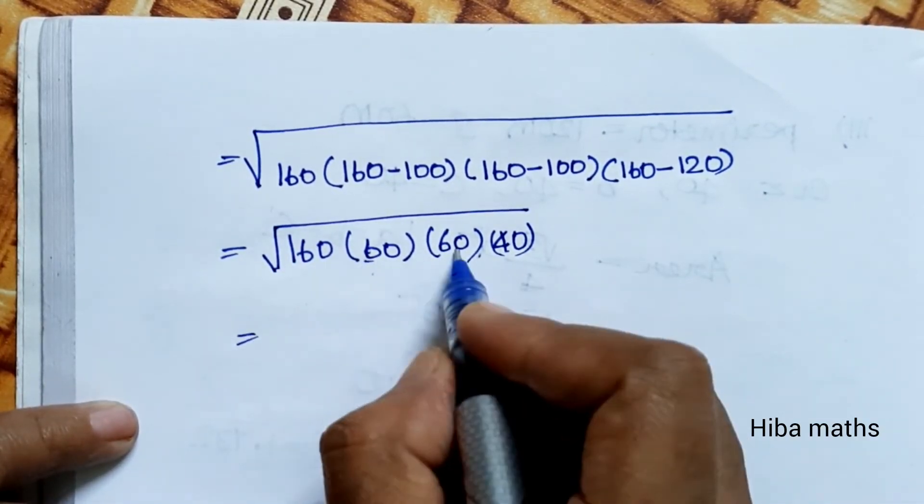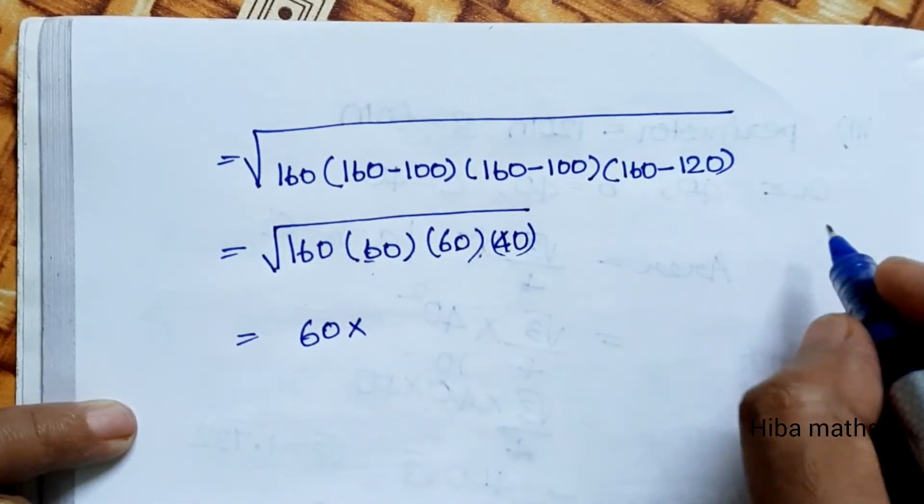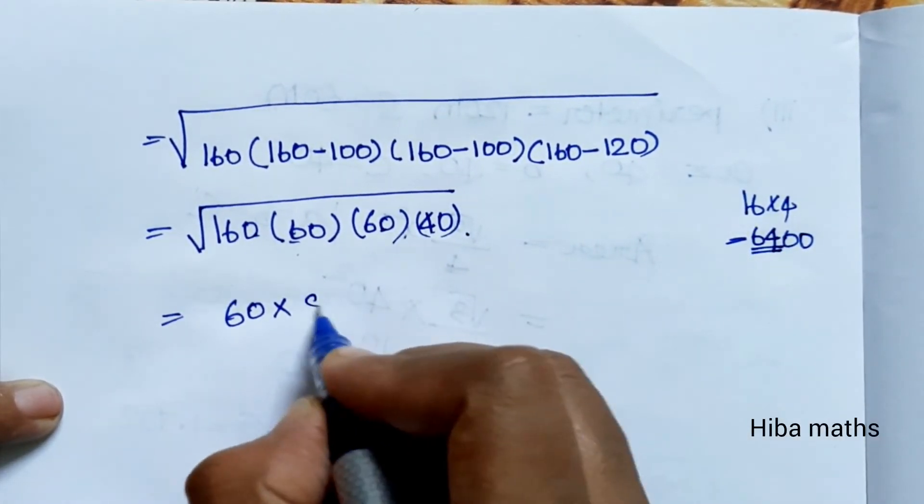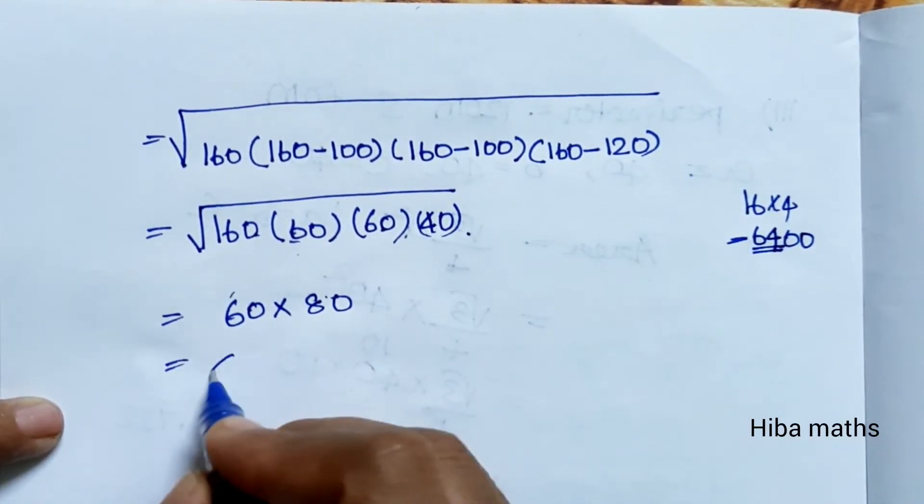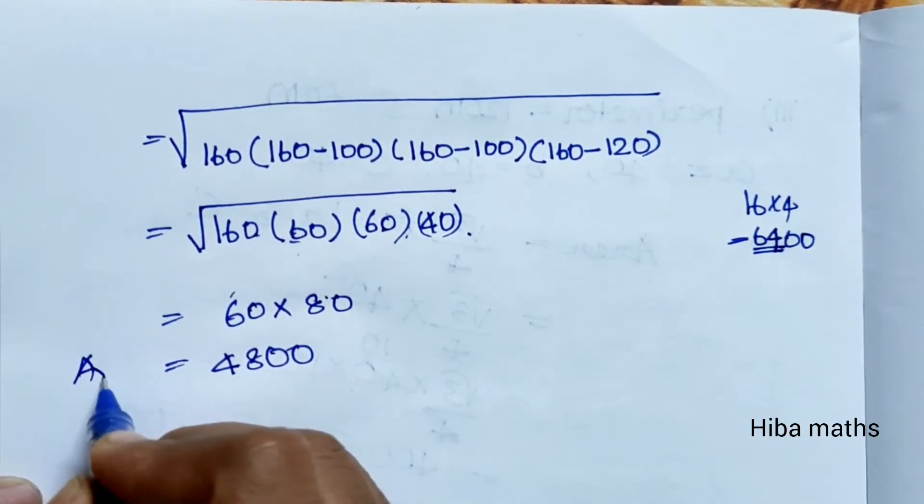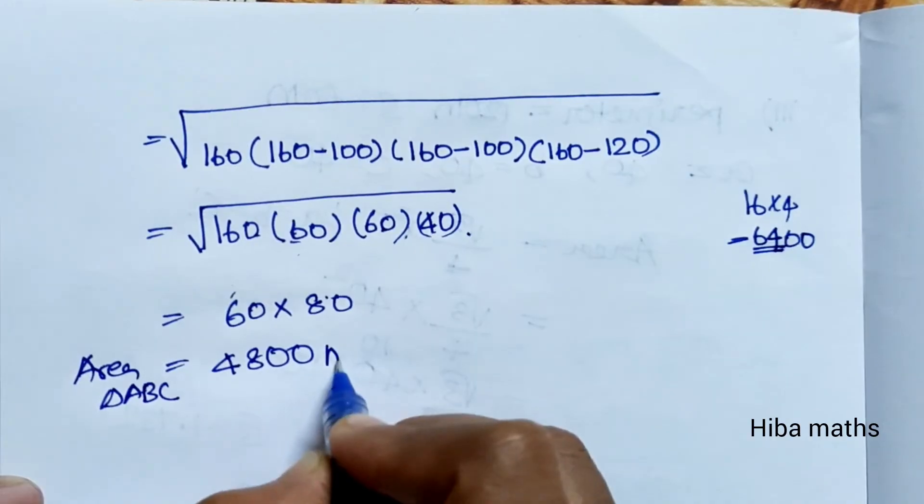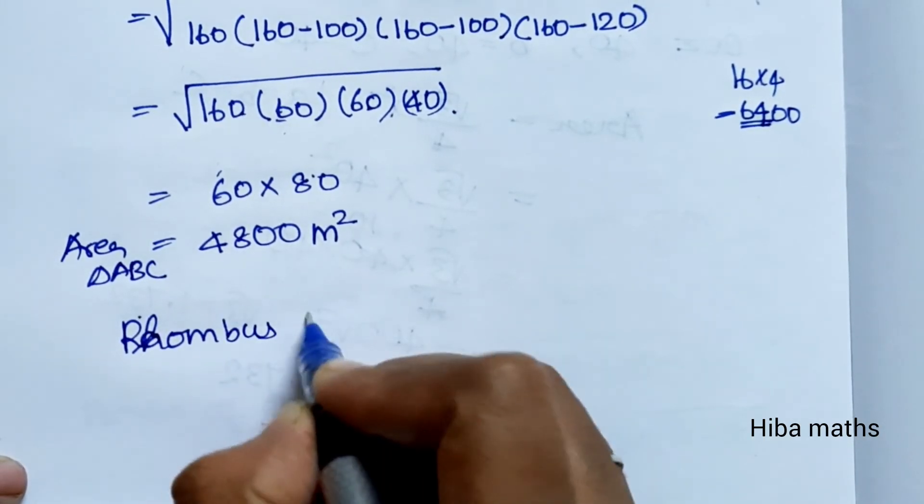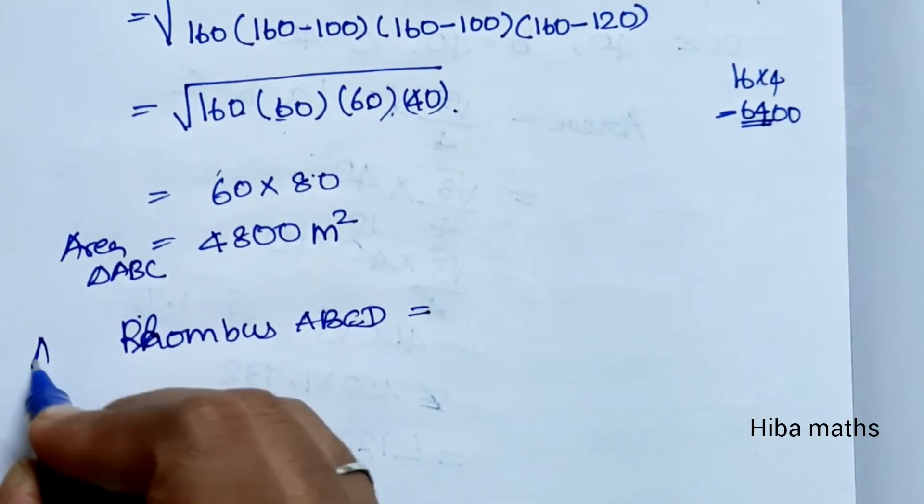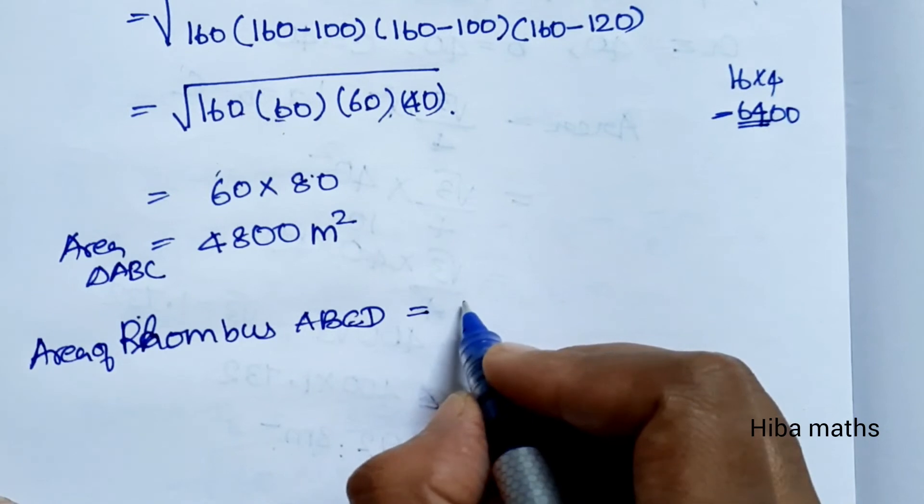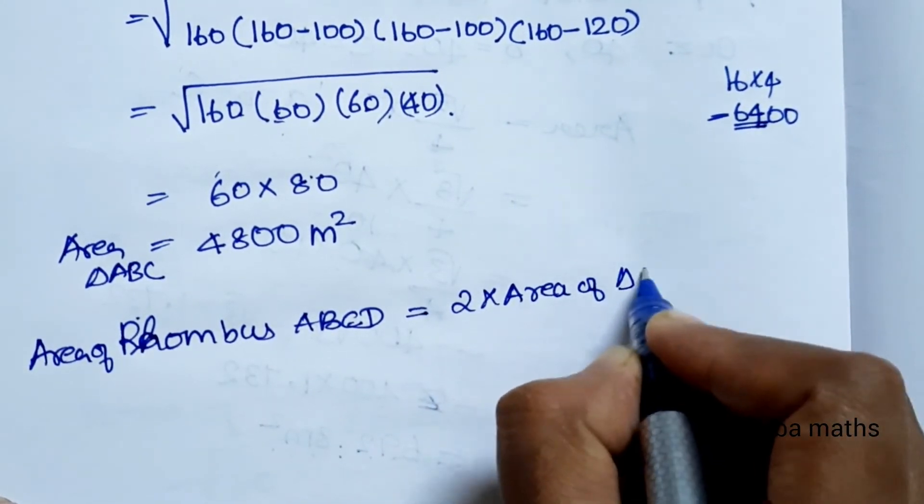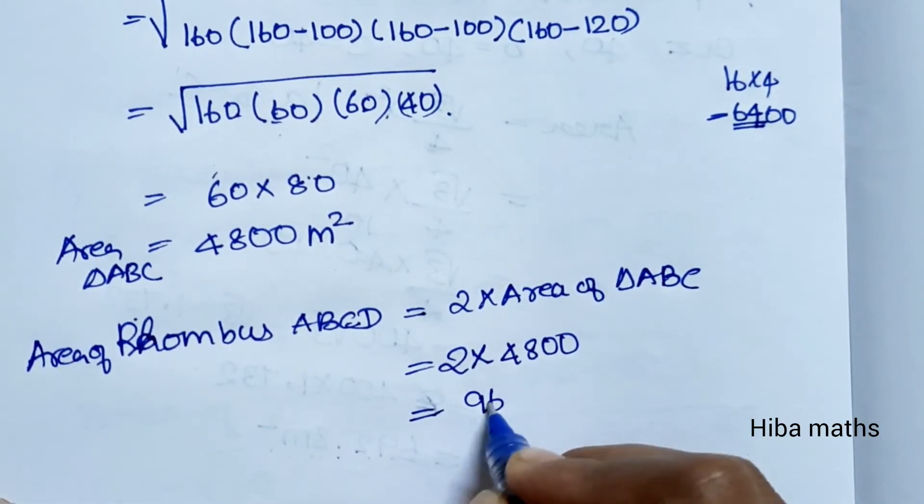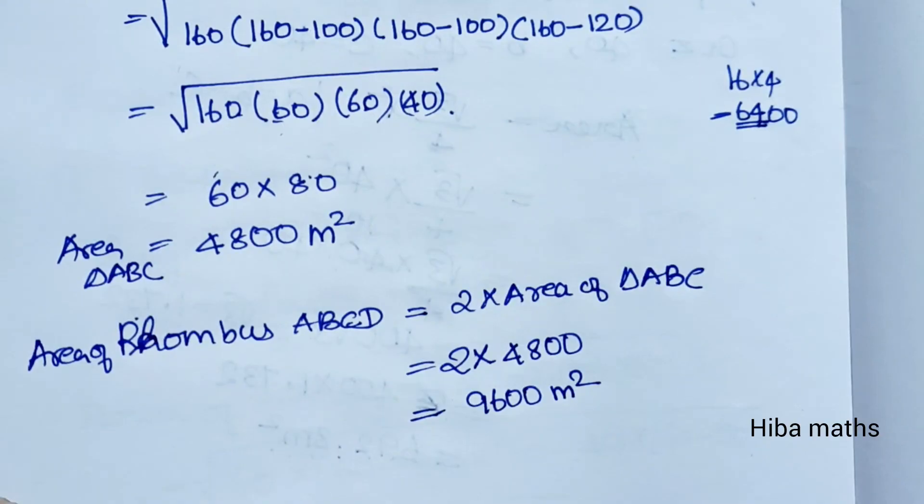Simplifying: 16 into 4 gives us the area of triangle ABC as 4800 square meters. The area of rhombus ABCD equals 2 times the area of triangle ABC, which is 2 times 4800, equals 9600 square meters. That's the answer. Easy to understand. Thank you so much for watching.